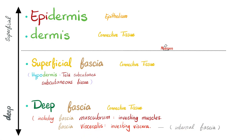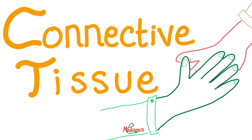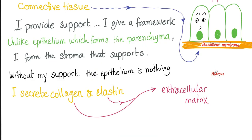This is the internal fascia. What is it made of? It's made of connective tissue. How many types of tissue do you have in your body? Four: epithelium, connective tissue, muscle tissue, nerve tissue. Connective tissue provides support and gives a framework. Unlike the epithelium, which forms the parenchyma, connective tissue forms the stroma that supports. Without its support, the epithelium is nothing. It also supports your internal organs, so that if you're flipped upside down, your stomach will not fall into your pelvis.